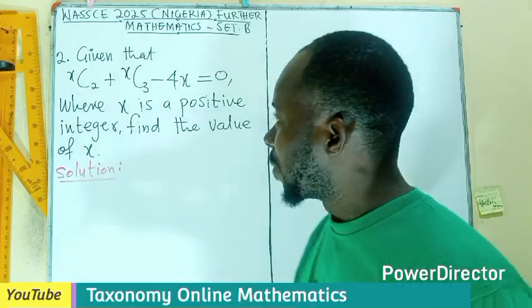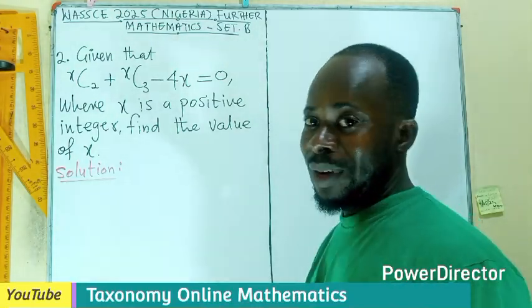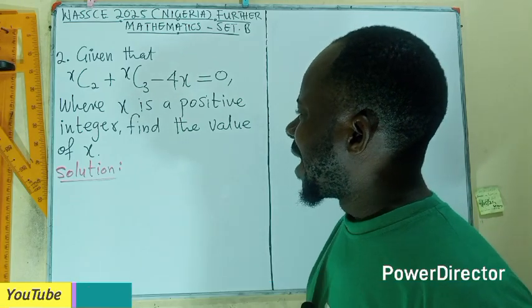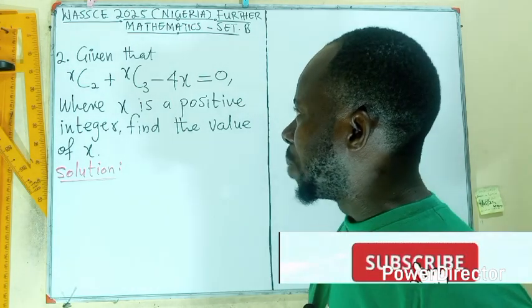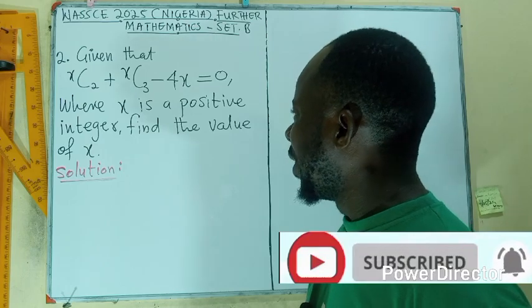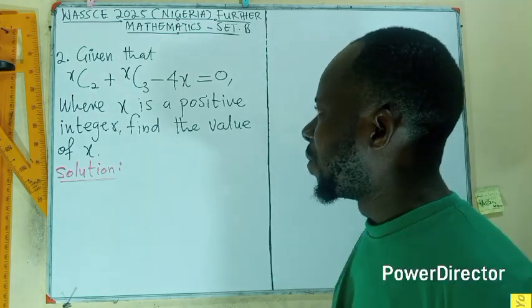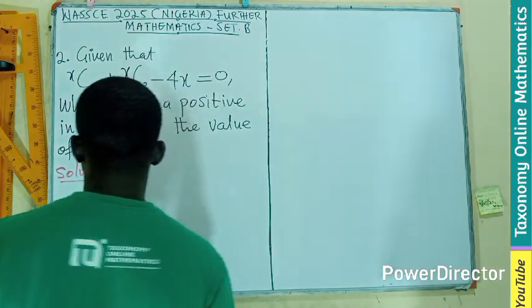Welcome to question number 2, still on WASI Nigeria Further Mathematics question paper 2. Given that x combination 2 plus x combination 3 minus 4x equals 0, where x is a positive integer, we have to find the value of x. Let's get started.